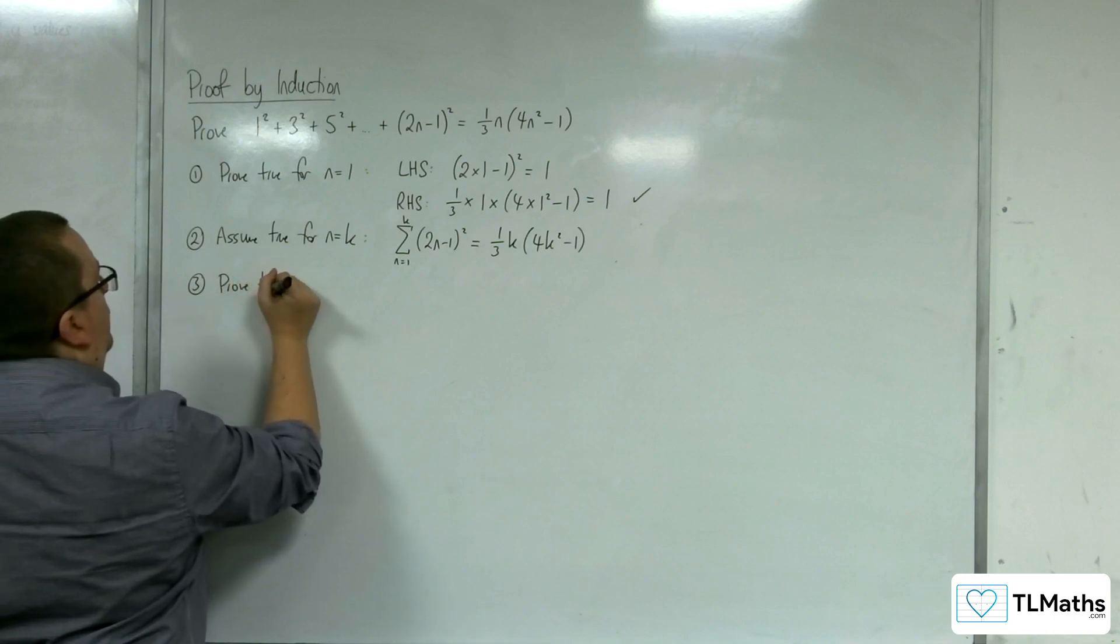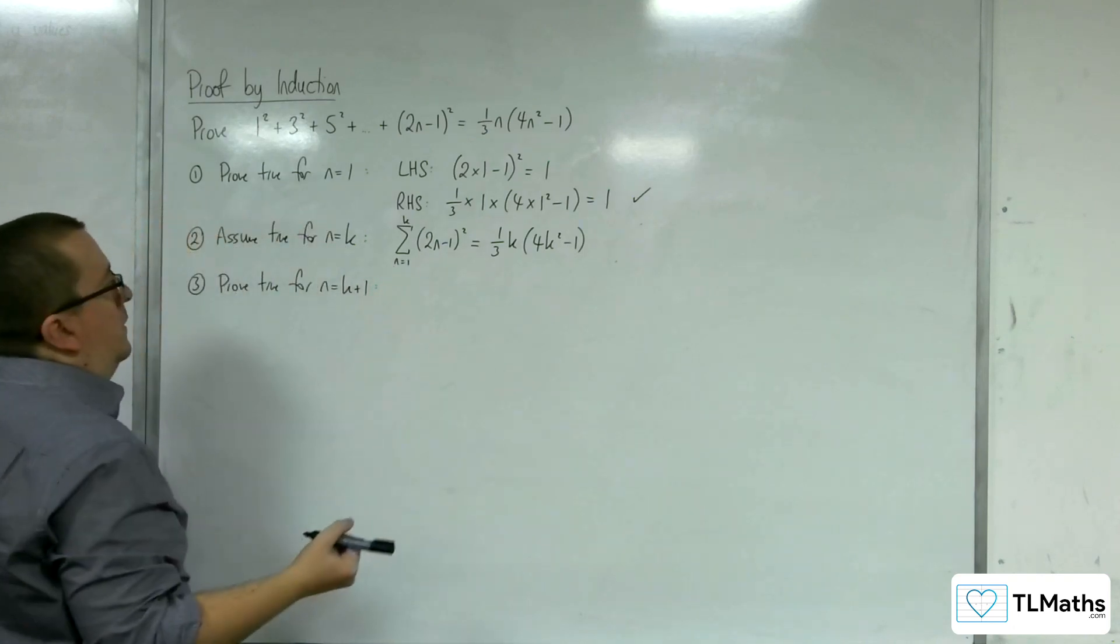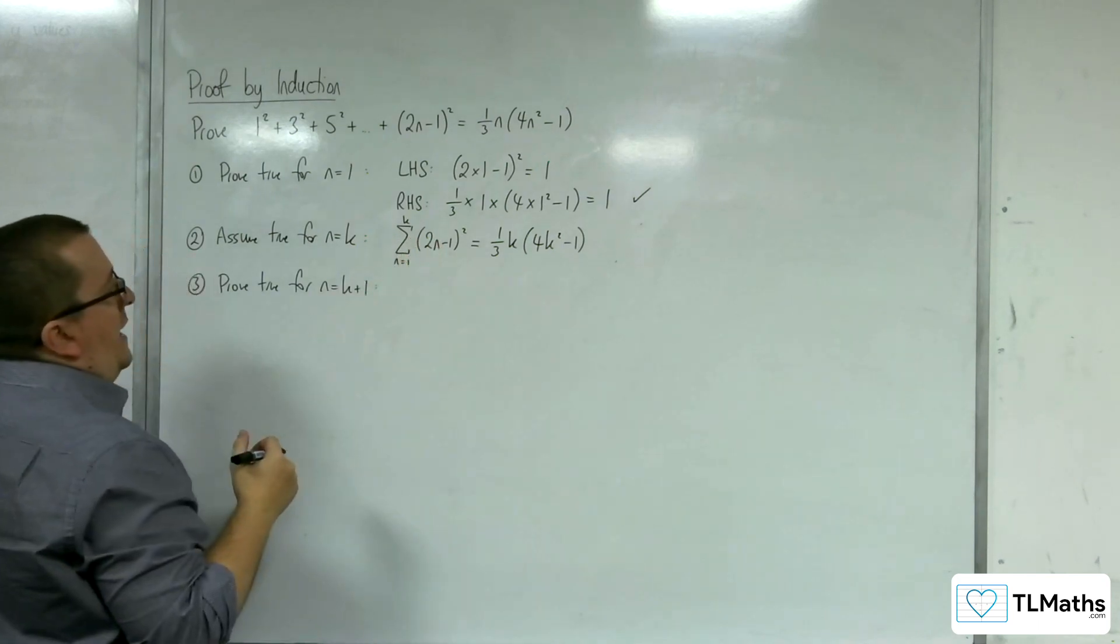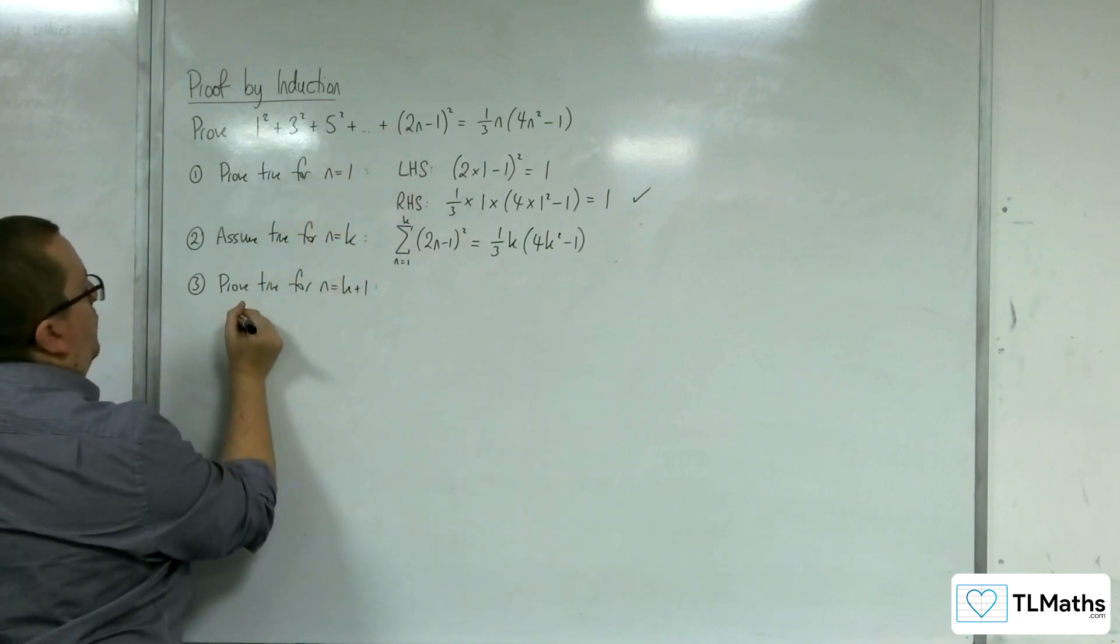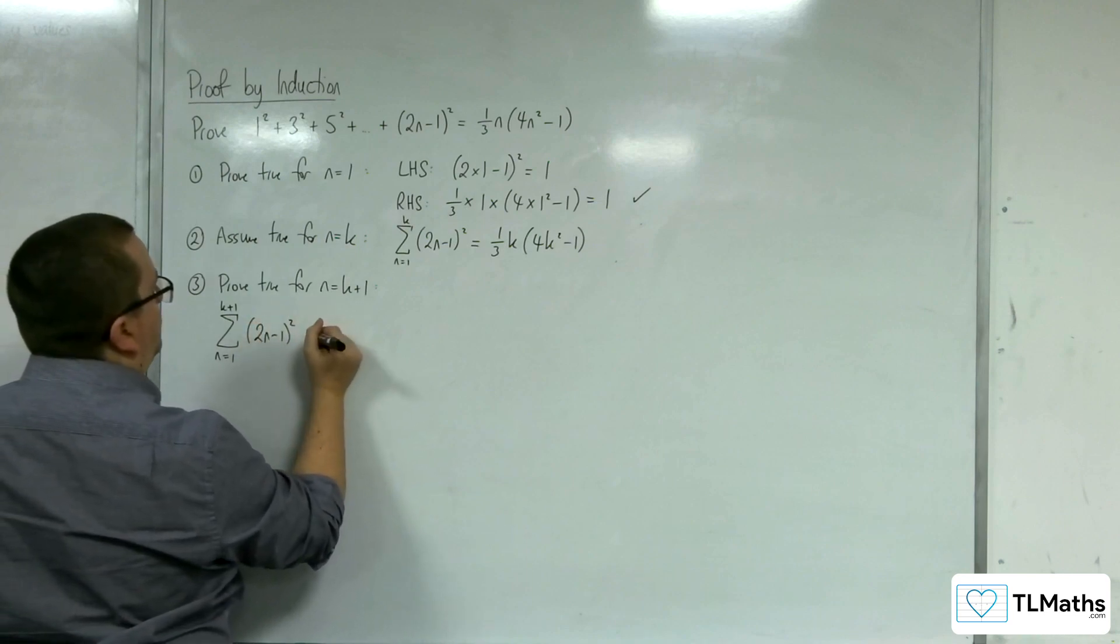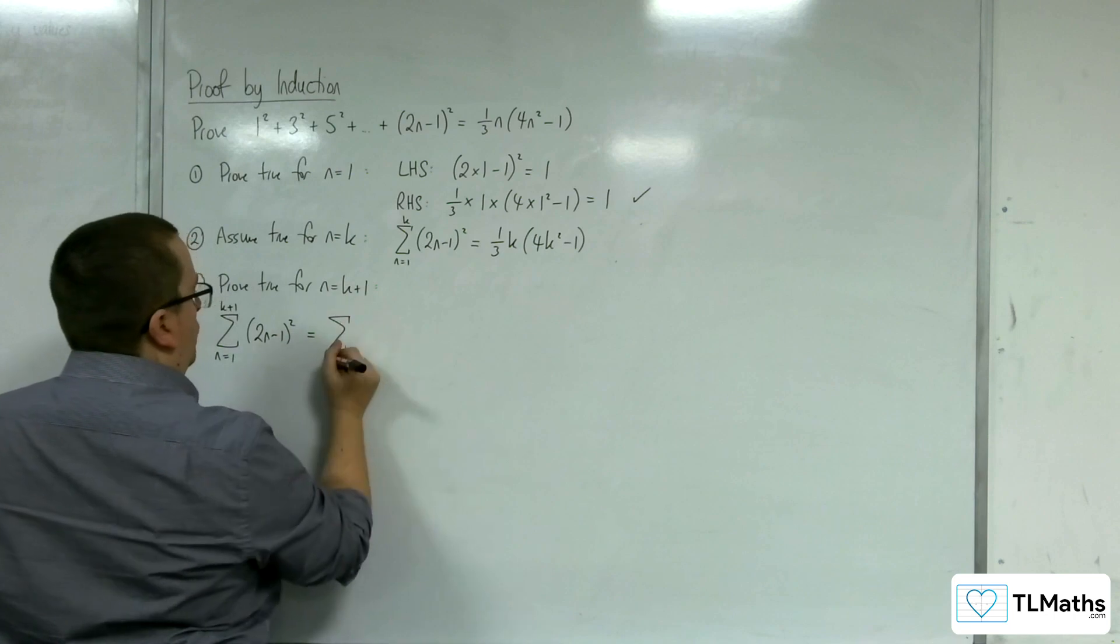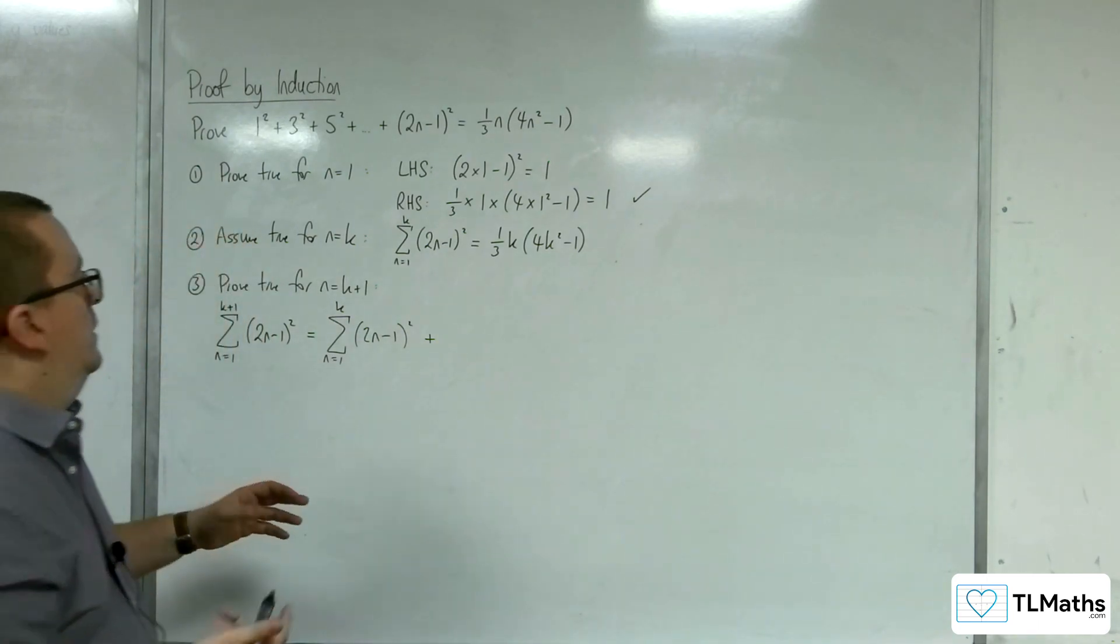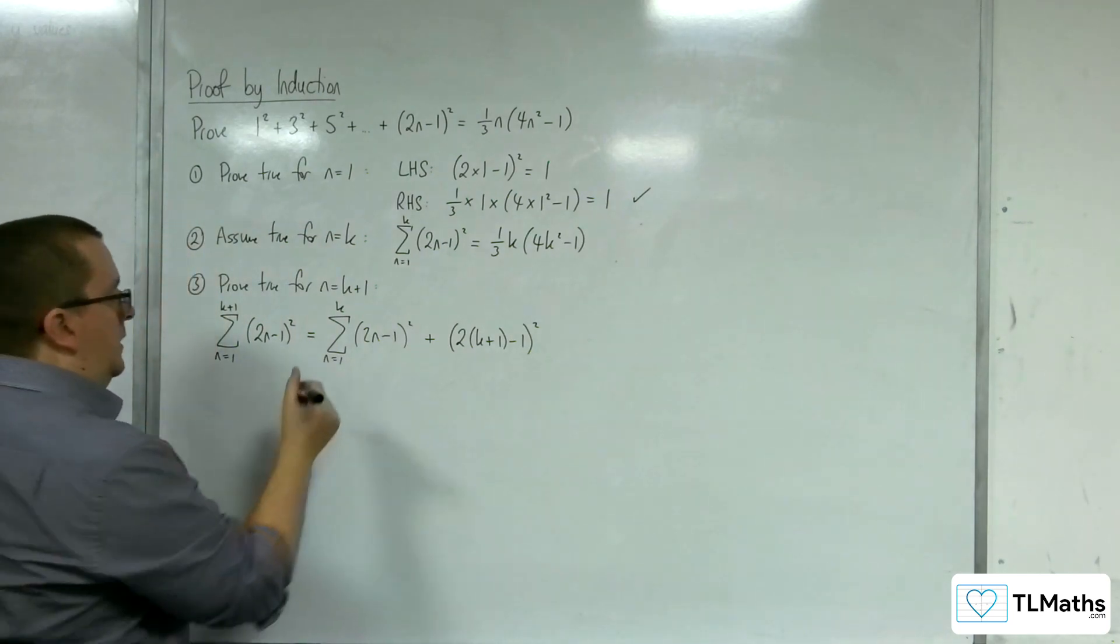Step 3, we need to prove that it's true for n equals k plus 1. Right, so in doing that, we're going to look at substituting the n for k plus 1 here into the left hand side. So we would actually be adding up from n is 1 up to k plus 1 of this 2n minus 1 squared. So what is that? Well, that is the sum from n is 1 up to k of 2n minus 1 squared plus the extra term when I substitute in the k plus 1. So the extra term is 2 lots of k plus 1, take 1, squared.